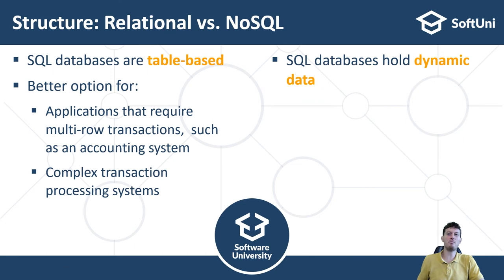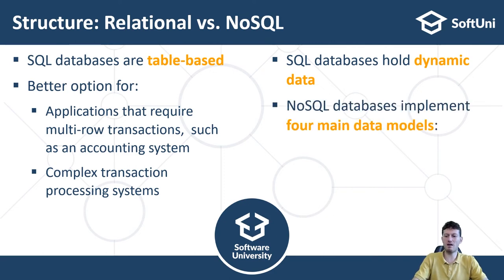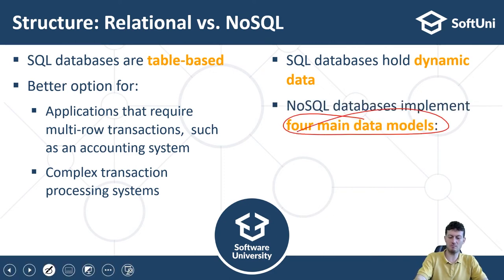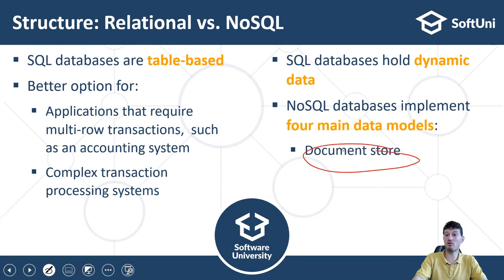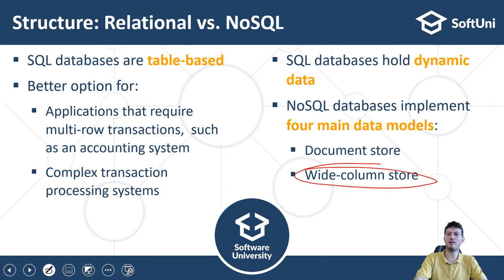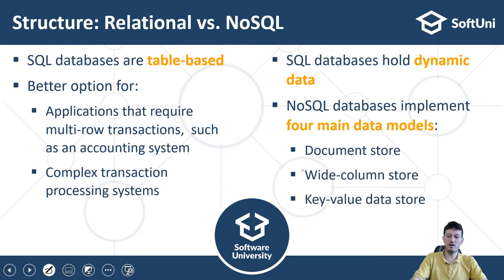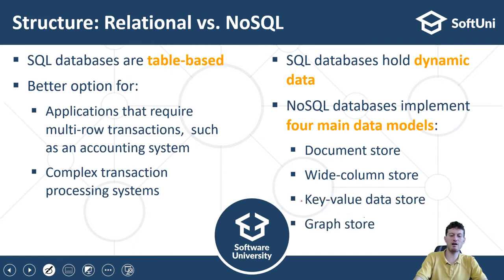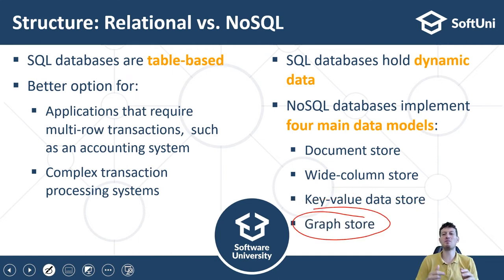In case it isn't clear what data you'll be working with and the structure of data is variable, you could choose a NoSQL database. NoSQL databases are also a good choice for small and simple systems such as a blog, content management system, or mobile backend. The four main NoSQL data model types are: document store (collections and documents), wide column store (tables with dynamic columns), key-value data store (key-value pairs), and graph store (nodes with relationships to other nodes).